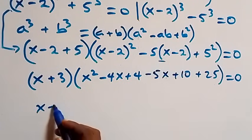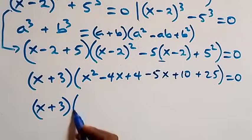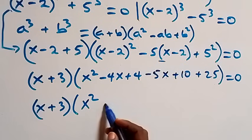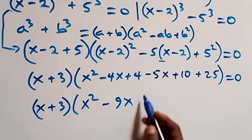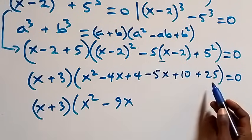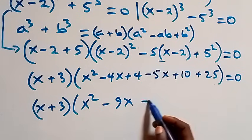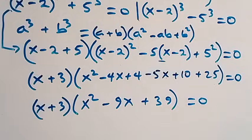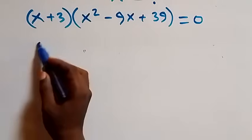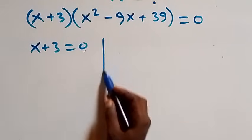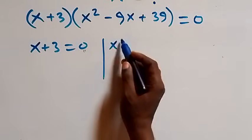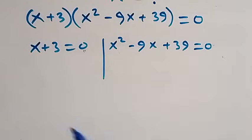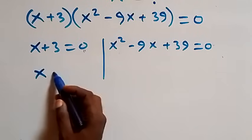Simplifying inside the bracket: x squared, minus 4x minus 5x gives minus 9x, and 4 plus 10 plus 25 gives 39. So we have x plus 3, times x squared minus 9x plus 39, equals to 0. This gives two cases: x plus 3 equals 0, giving x equals minus 3, which is a real solution.